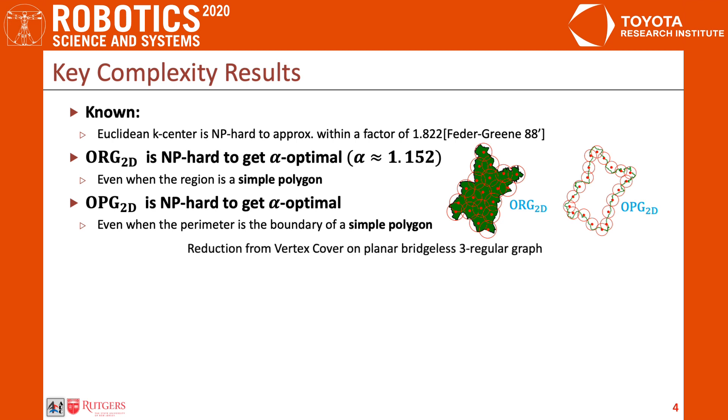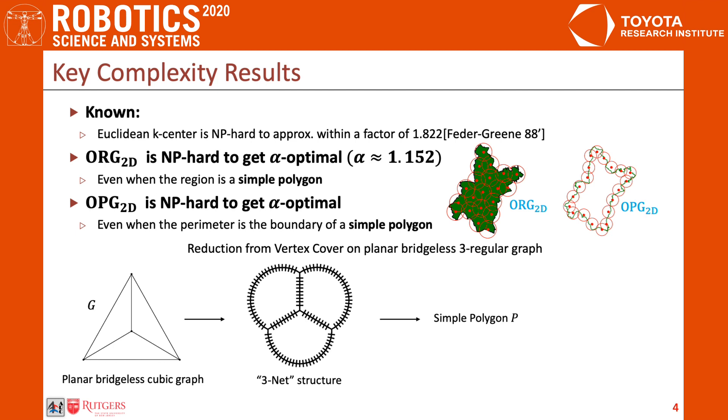The reduction consists of a series of auxiliary intermediate results. Our key reduction starts from a vertex cover on a planar bridgeless cubic graph G, which is shown to be NP-hard in our work. In the second step, the planar graph is embedded and expanded in the plane as a network structure, which we call 3-net. After some minor modifications, a simple polygon P can be created. Solving OPG or ORG with an approximation ratio of no more than alpha means solving the vertex cover problem of graph G. This suggests our main hardness result.